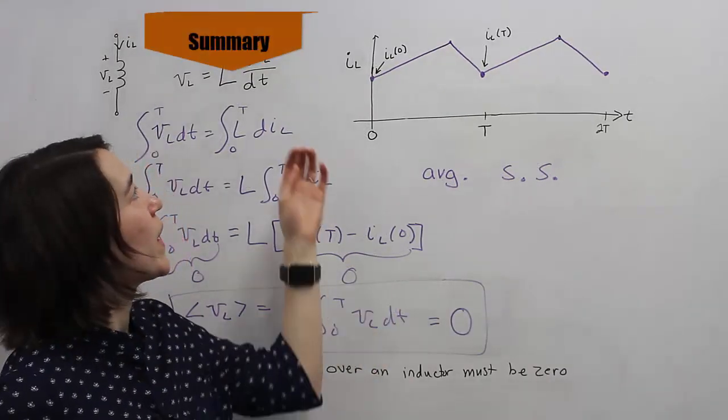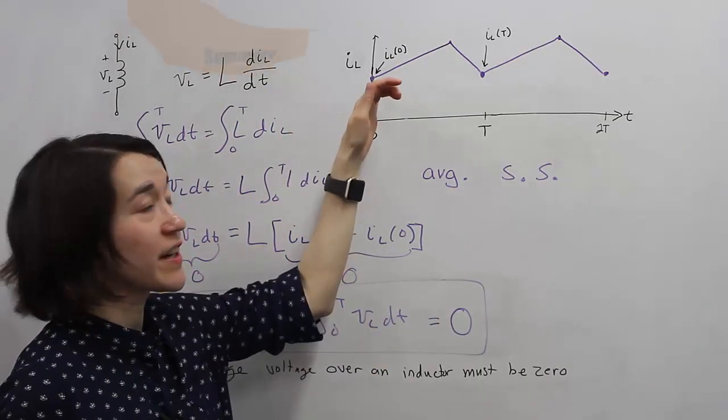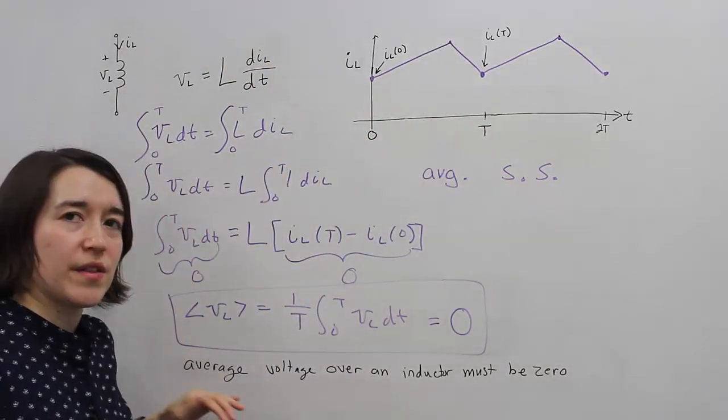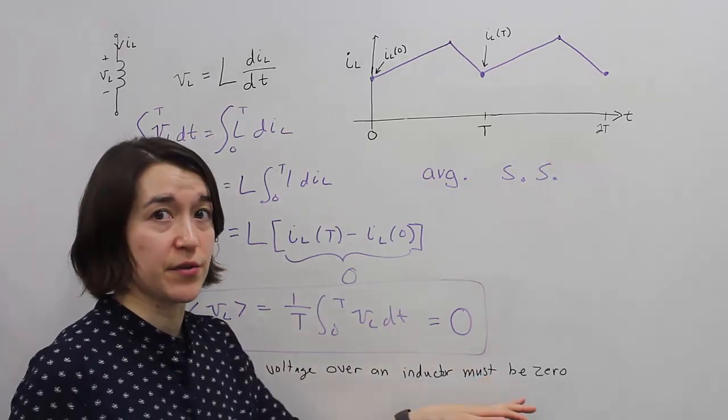In a system where the average current is in steady state, the average voltage over the inductor must be 0.